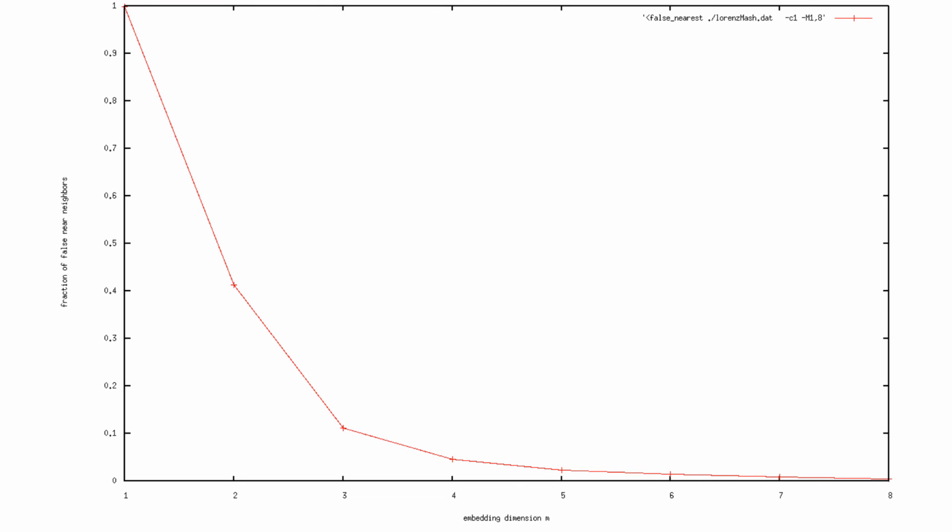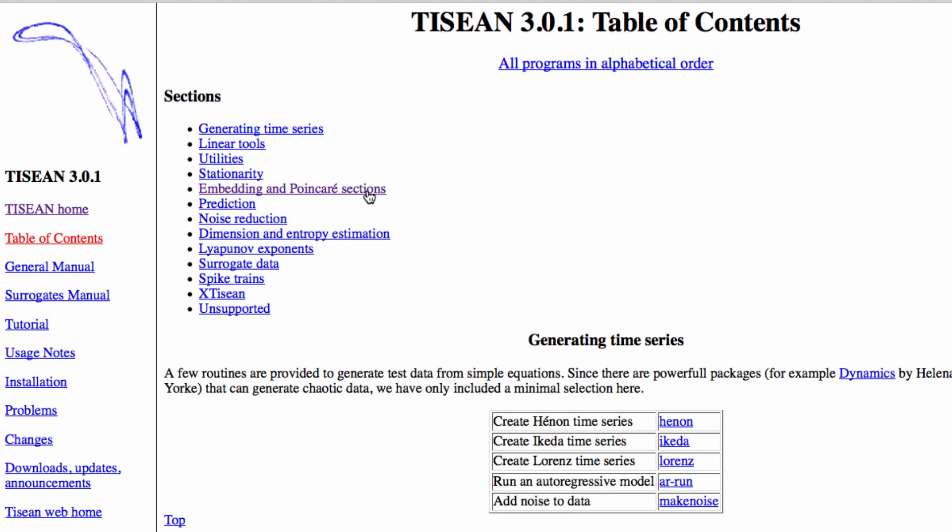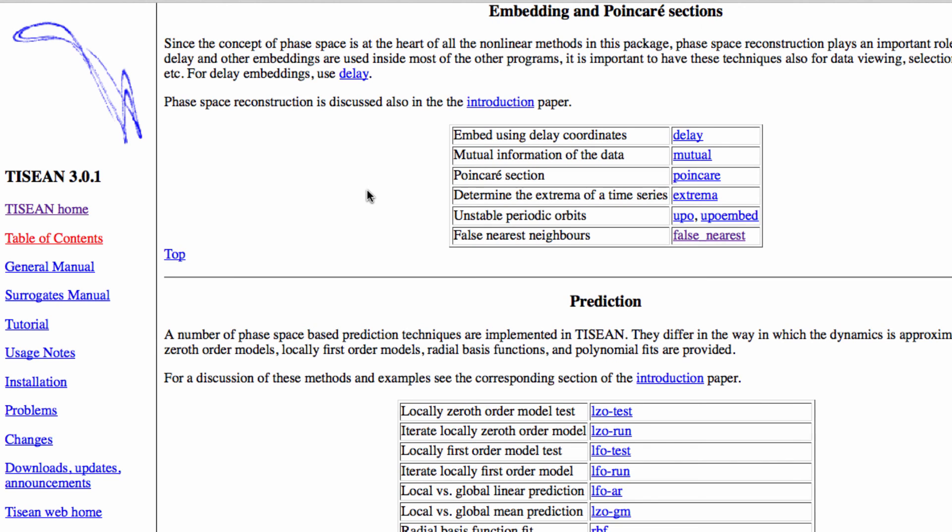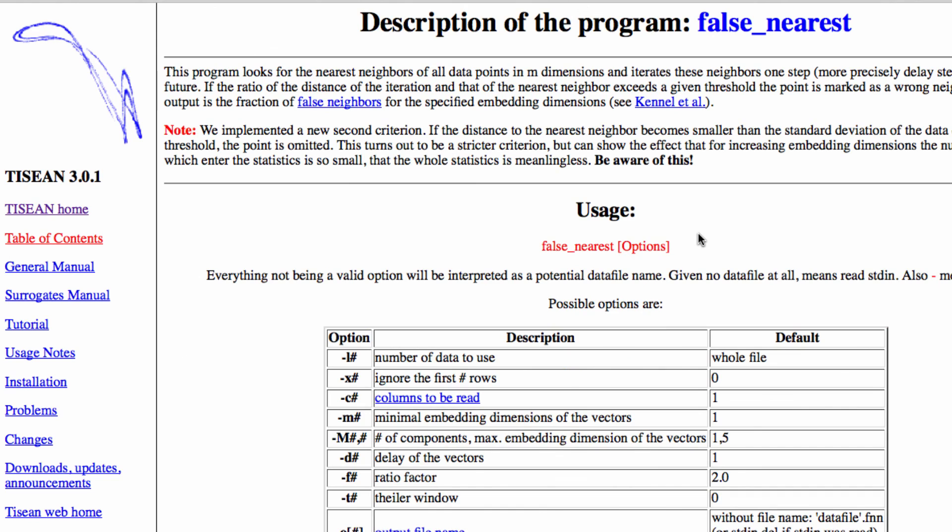In addition, I would recommend understanding all the different caveats of how the 10% threshold is chosen, especially with respect to noise. This will be talked about in more detail in the following section. And finally, I'd like to mention that the TISEAN tool I mentioned earlier can also do this calculation for you, using what's called the false nearest command.